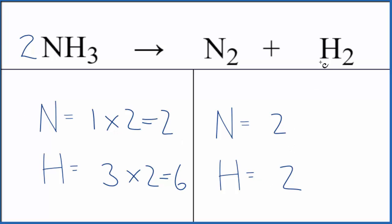Looks like all we need to do is put a coefficient of three in front of the H2. Two times three. That gives us six. We're done. This equation is balanced.